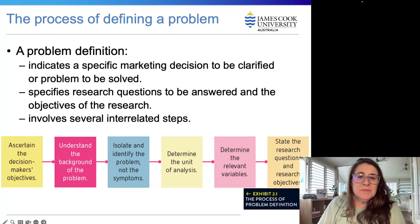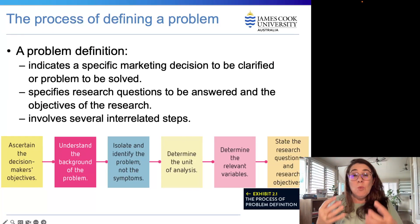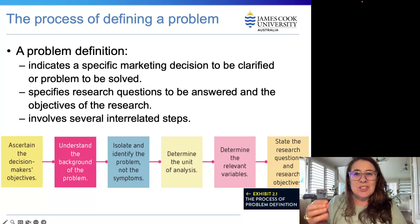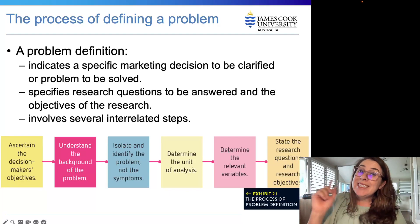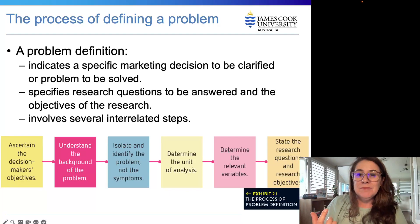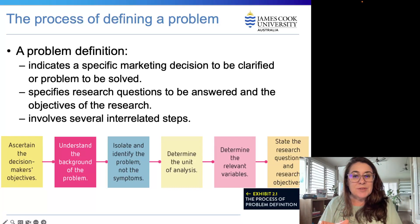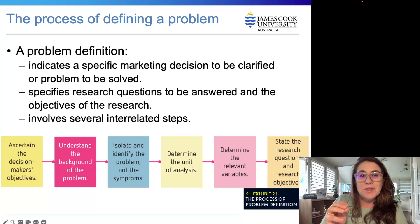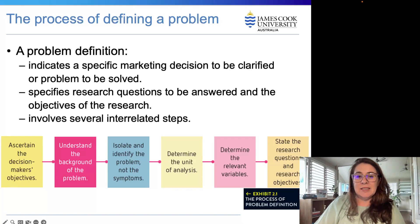The process of defining the problem involves six interrelated steps: first, ascertain what the decision makers' objectives are; second, understand the background of the problem; third, isolate and identify the problem — not the symptoms; fourth, determine the unit of analysis; fifth, determine the relevant variables; and sixth, state the research questions, hypotheses and research objectives. We'll look into these in a little bit more detail.